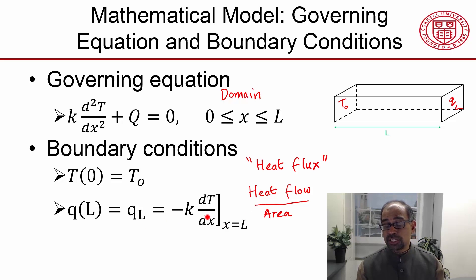And that's related to the temperature gradient at the right boundary through the Fourier's law. So essentially what we have here is the temperature gradient at this boundary. So we have the temperature here and we have the temperature gradient here.